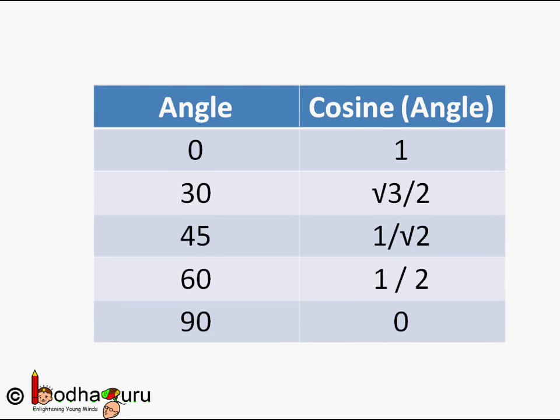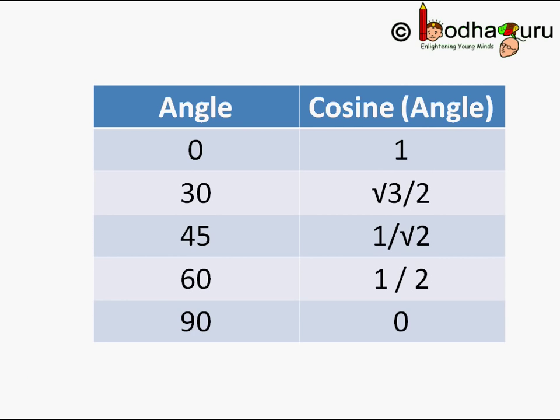Cosine of angle 0 degrees is 1. Cosine of 30 degrees is square root of 3 by 2. Cosine of angle 45 degrees is 1 by square root of 2, and so on.